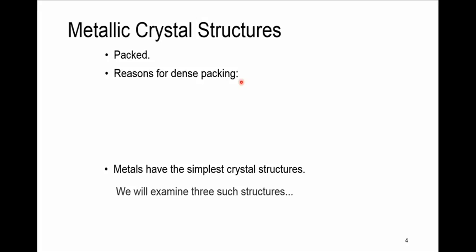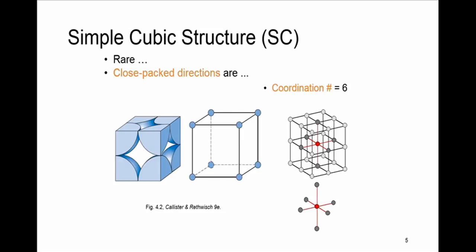Generally, metals have the simplest crystal structures, and we will discuss three types. The first type is a simple cubic structure, known as SC. This is rare due to low packing density — you can see there are lots of space left between the atoms. Only polonium has this structure. The close-packed direction, the direction with the highest number of atoms, is along cube edges, as you can see here.